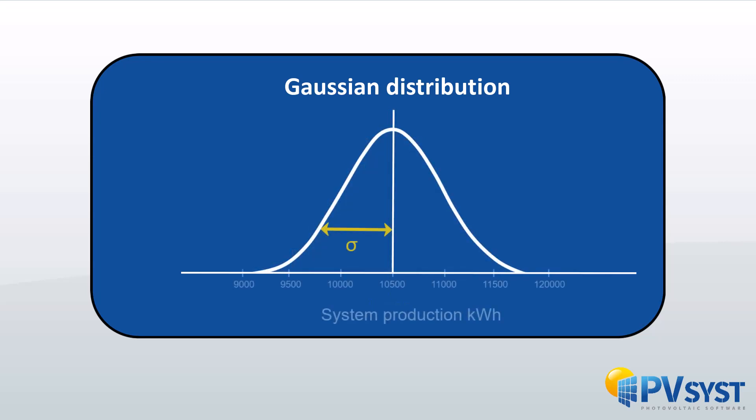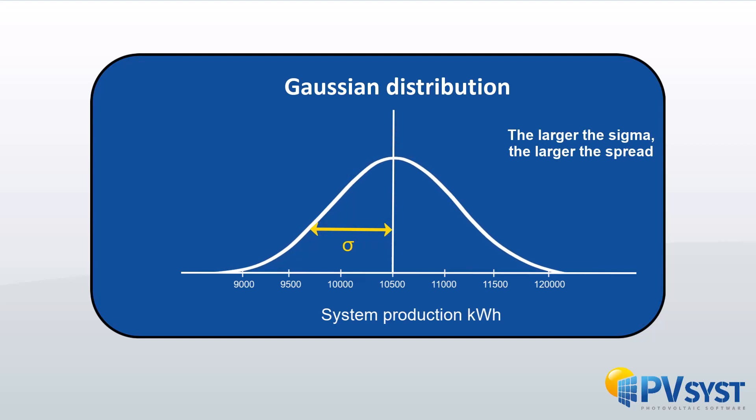The standard deviation sigma describes the spread of the normal distribution. The larger the sigma the more spread out the distribution will be. And the contrary, the smaller the sigma the distribution is less spread out accumulating more data near the mean.